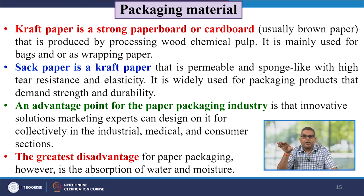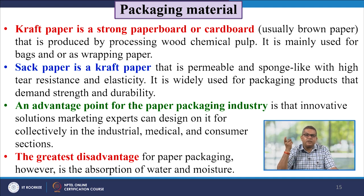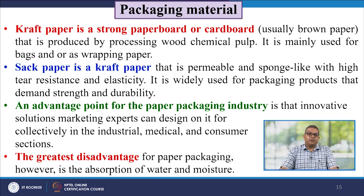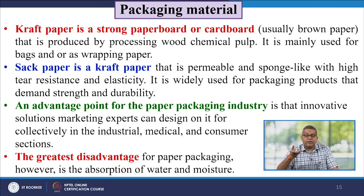Kraft paper, usually a strong paperboard or cardboard — the brown paper produced by processing wood chemical pulp — is mainly used for bags or as wrapping paper. Sack paper is a kraft paper that is permeable and sponge-like with high tear resistance and elasticity, widely used for packaging products demanding strength and durability. The greatest disadvantage of paper packaging is water and moisture absorption, which makes it unsuitable for different food packets as it may promote microbial activity.